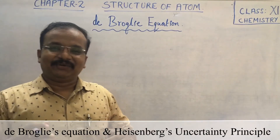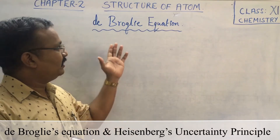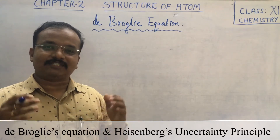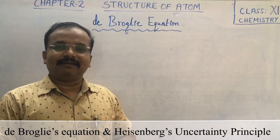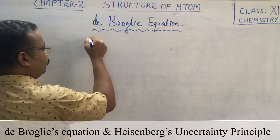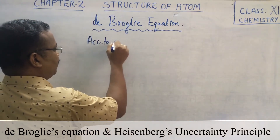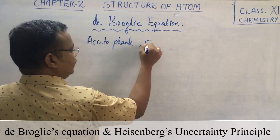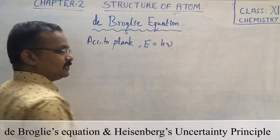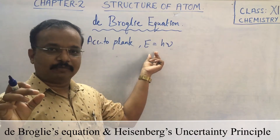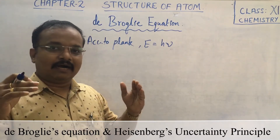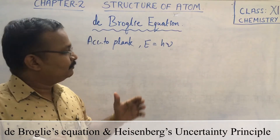Hello students, welcome. Today we shall learn about how de Broglie explained his equation in order to explain the particle nature as well as the wave nature of electromagnetic radiation. De Broglie derived his relationship with the help of Planck's quantum theory, that is E is equal to H nu — energy emitted or absorbed in the form of quanta of energy.